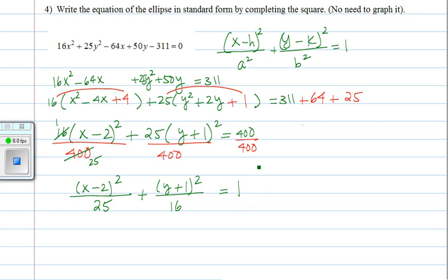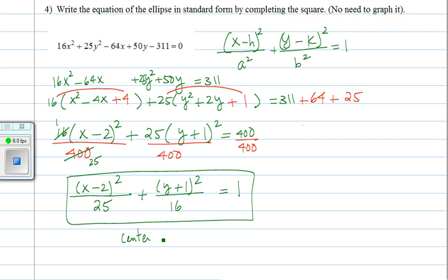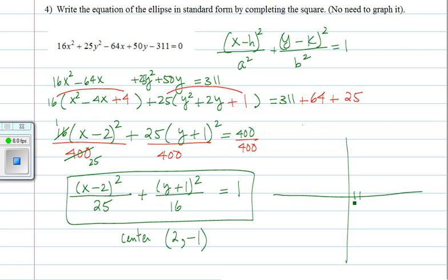We don't need to graph it — we are done with the problem. But just in case they had asked us to find the center, it would be (h, k), which is the opposite of this number: 2, and the opposite of that number: negative 1. And just for practice, let's graph this because we do need to know how to graph ellipses. You put the center at (2, negative 1) and go in the x direction — left and right — 5 units.